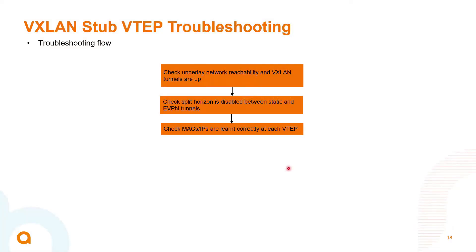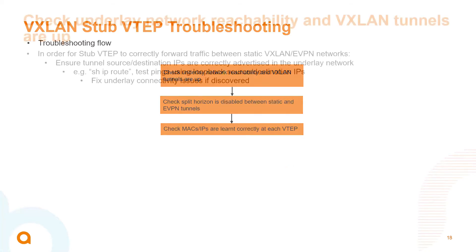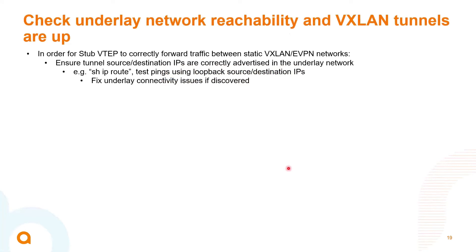For the troubleshooting flow: first check the underlay network for reachability, then make sure tunnels are up. Next, check that split horizon is disabled between the static and eVPN tunnels. Finally, check that MAC and IP addresses are learned correctly at each VTAP. To verify underlay, check the routing table and test pings using the loopback source and destination IPs to confirm the two VTAPs can communicate, then fix underlay connectivity issues if needed.